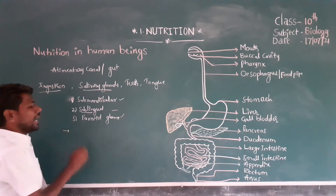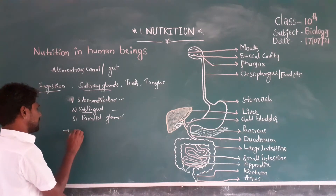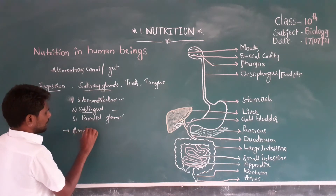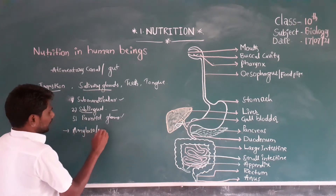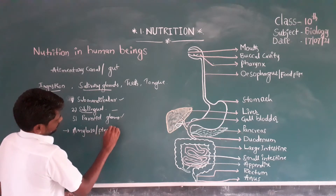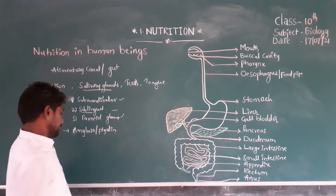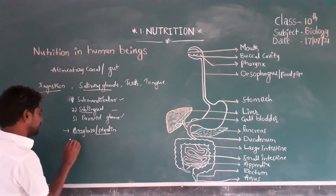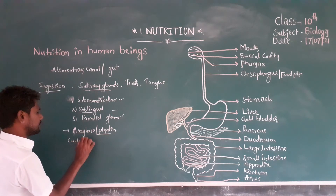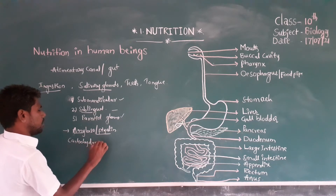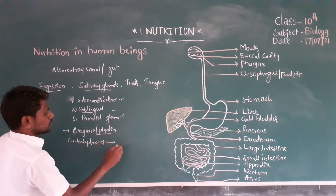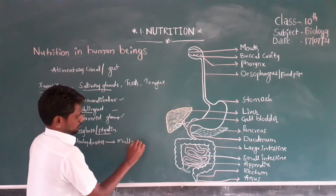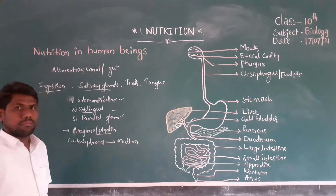All these salivary glands secrete one enzyme. The enzyme is called amylase, also known as ptyalin. This enzyme converts carbohydrates into simple sugars like maltose.